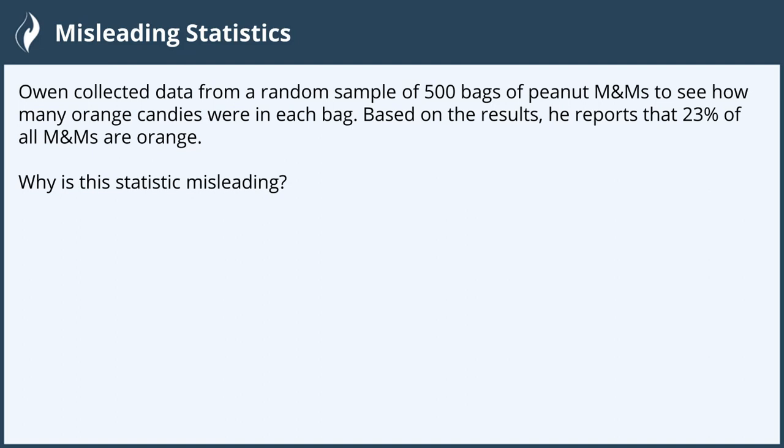Hi everyone, in this video we will go through misleading statistics. Owen collected data from a random sample of 500 bags of peanut M&Ms to see how many orange candies were in each bag. Based on the results, he reports that 23% of all M&Ms are orange. Why is this statistic misleading?